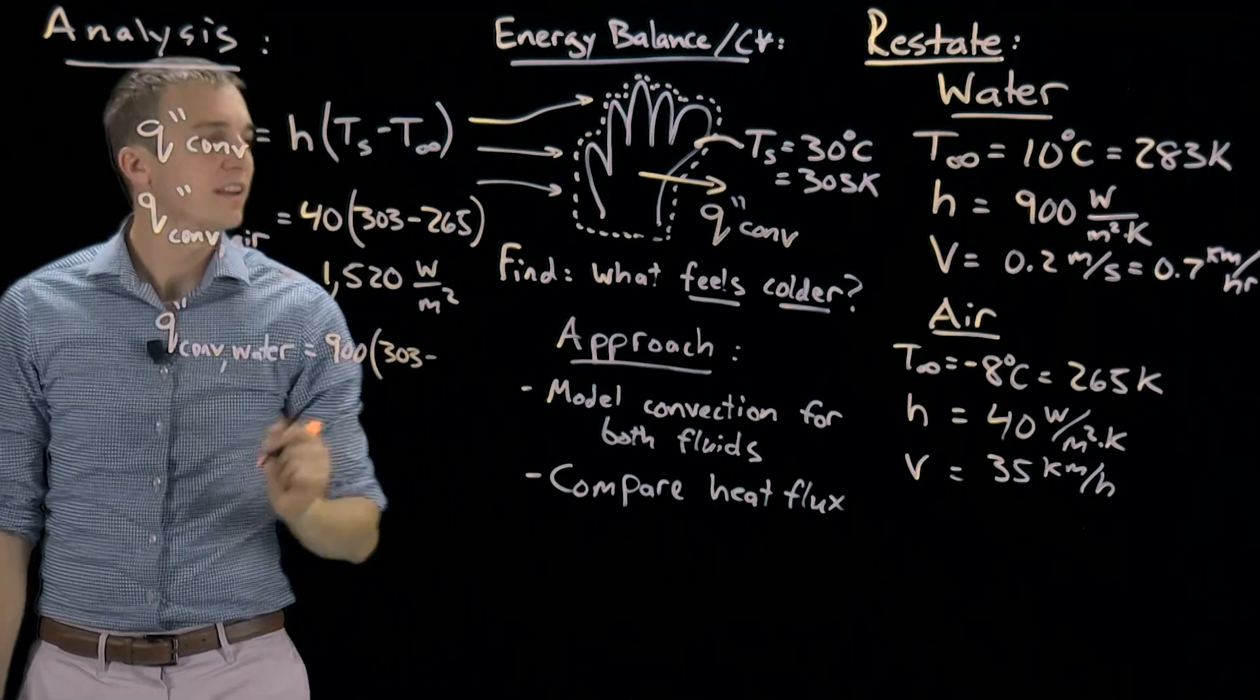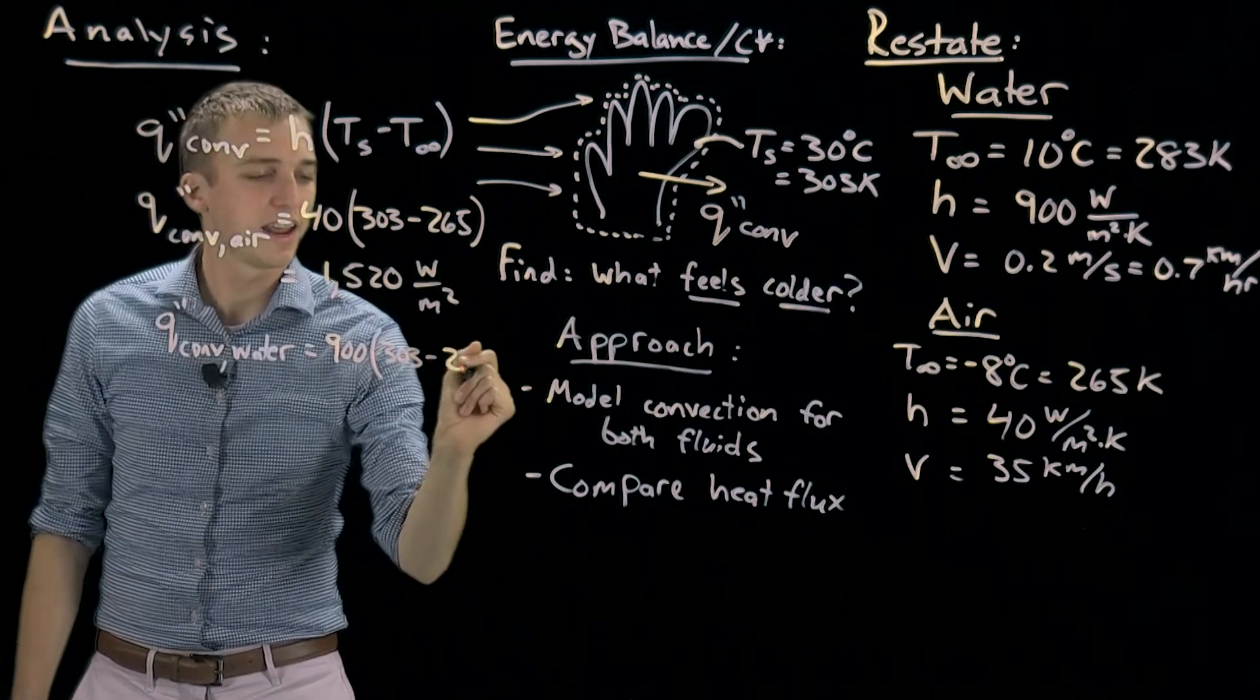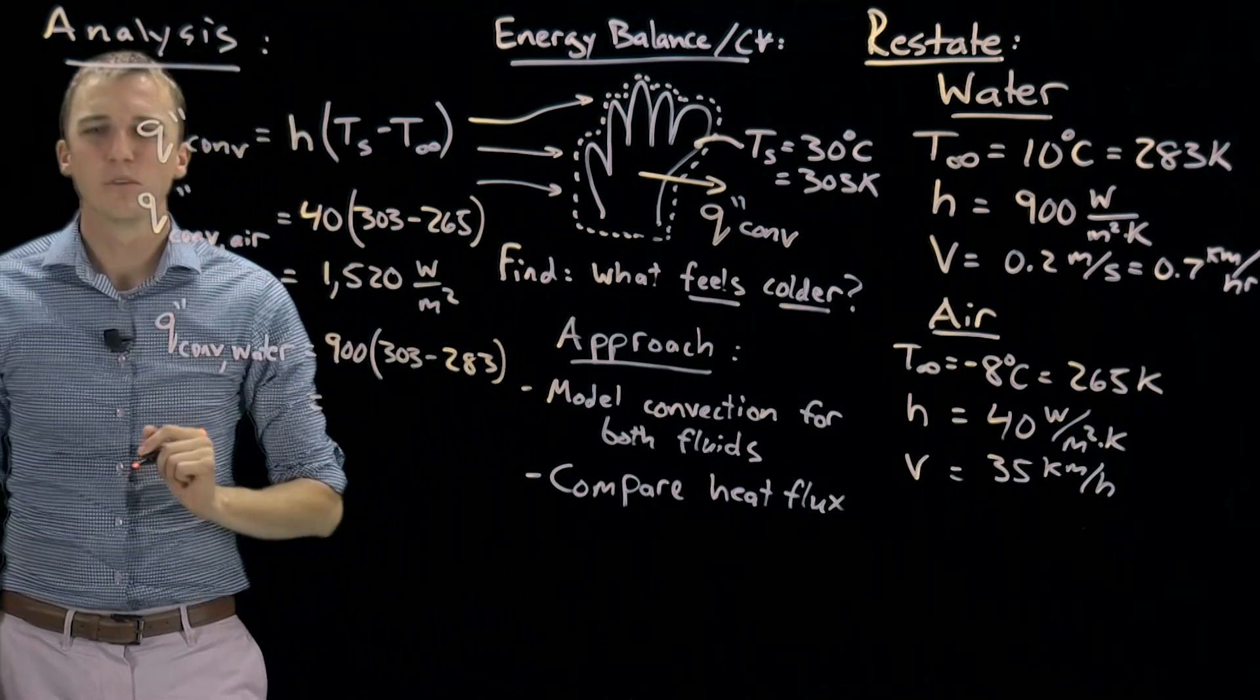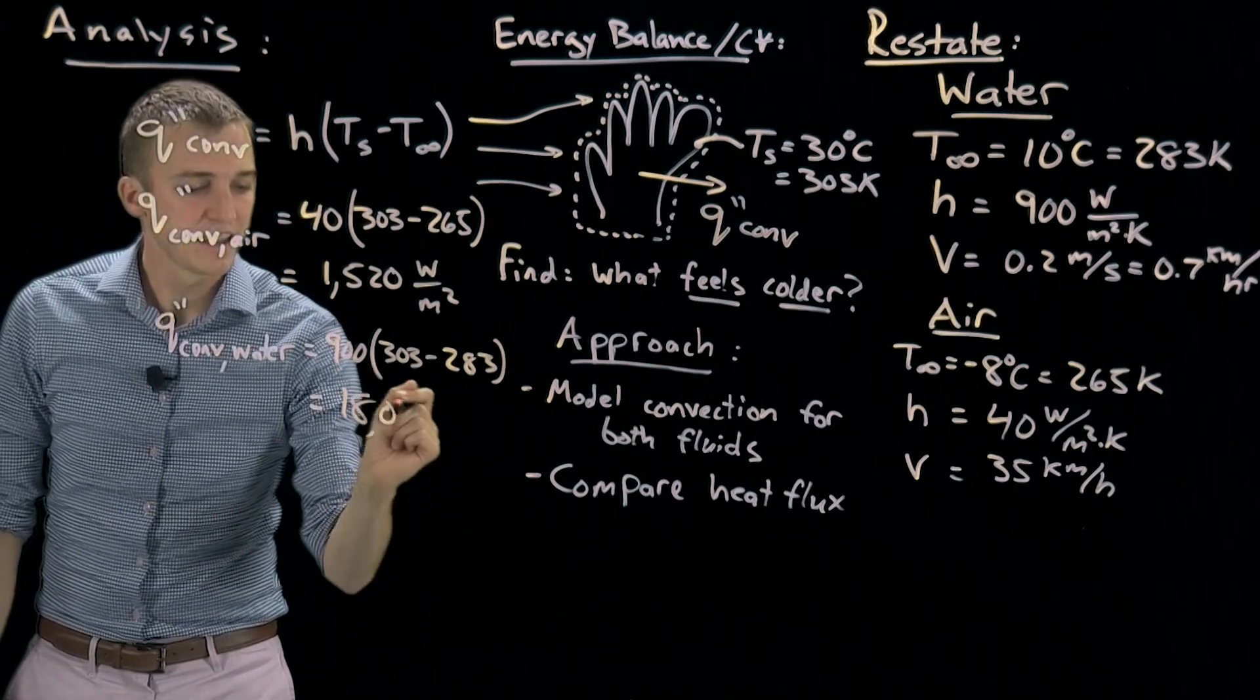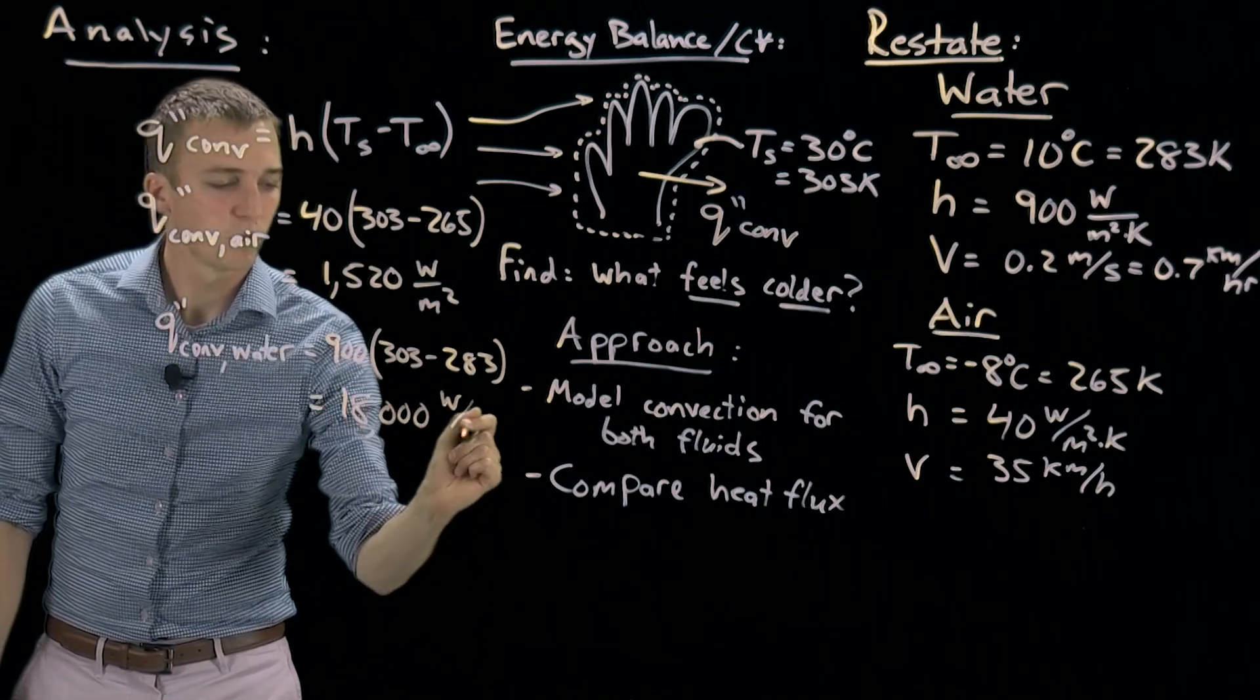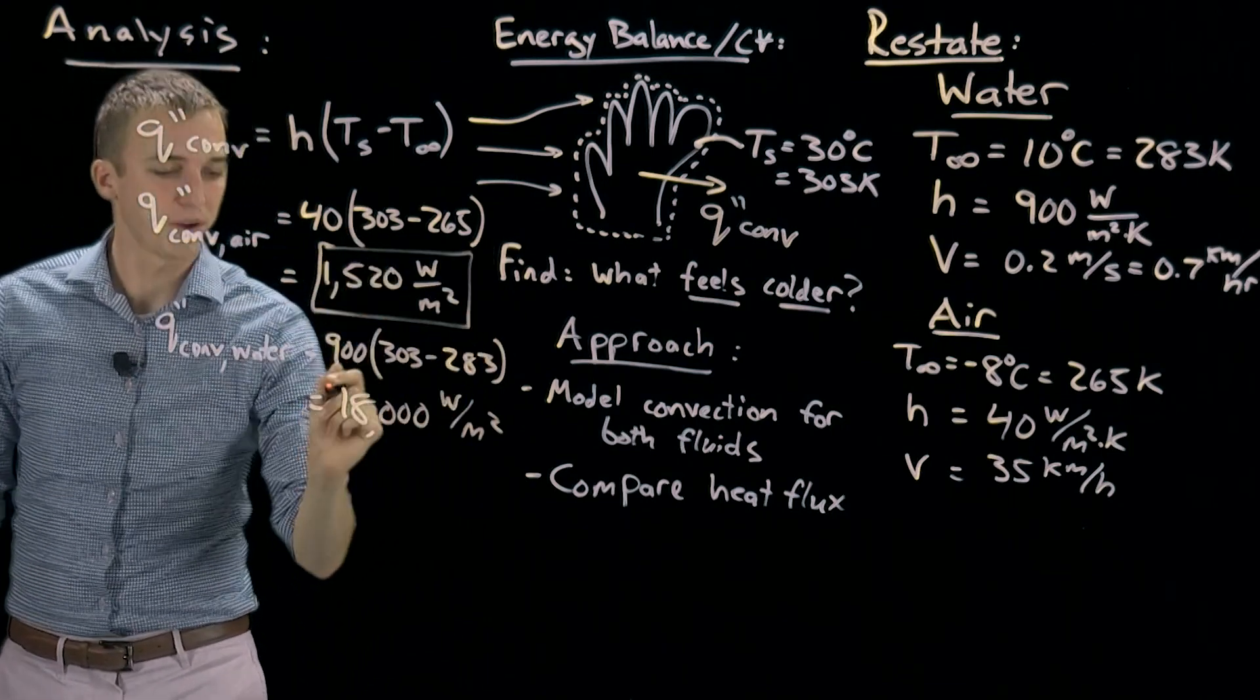Again 303, minus the temperature of our water, which is 283 kelvin. When we run those calculations, we get 18,000 watts per meter squared. We'll go ahead and indicate those with boxes.